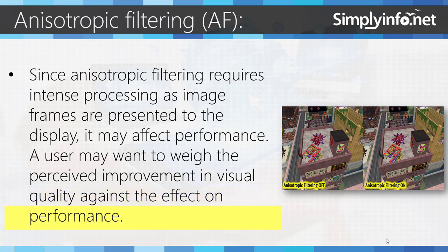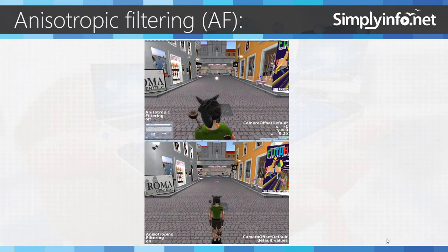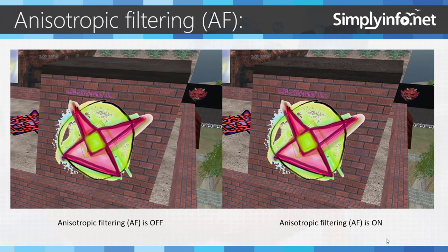On the right side you might see some images with Anisotropic Filtering off and on. Here is an example of an image with Anisotropic Filtering off and filtering on. Here is another example of AF on and off.